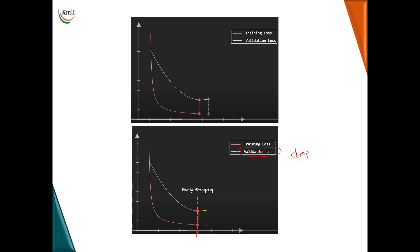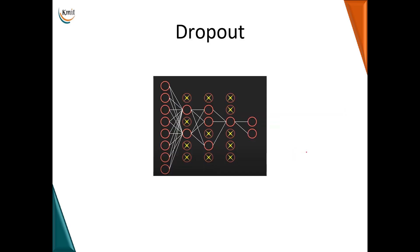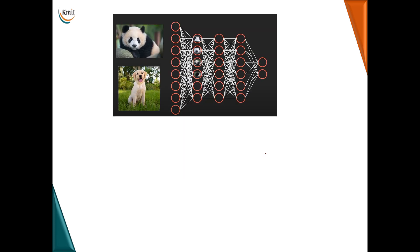In dropout, we randomly drop neurons from the network. When neurons are dropped, the number of neurons is reduced, thereby reducing the complexity and making the training process much faster. To understand dropout, consider an example where the model is asked to classify images of pandas and dogs. Each neuron handles a specific feature of the images — such as eyes, nose, color, and so on.